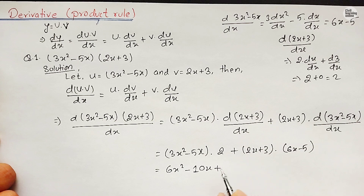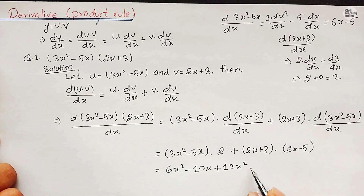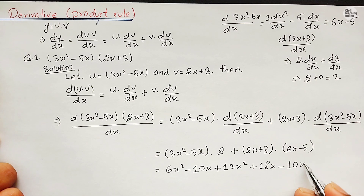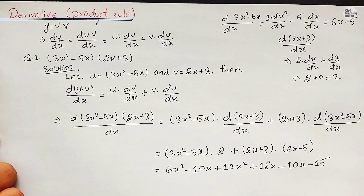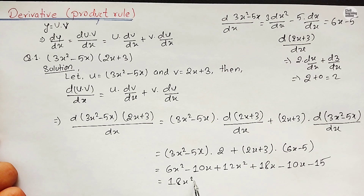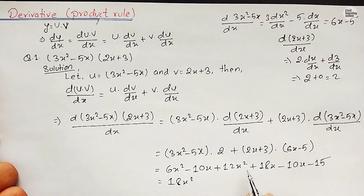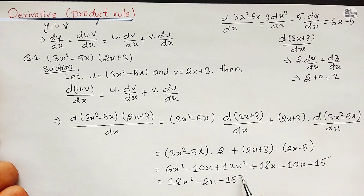Expanding and collecting: 6x² - 10x + 12x² + 18x - 10x - 15. Adding like terms: (6+12)x² = 18x², and -10 + 18 - 10 = -2x, giving the final answer: 18x² - 2x - 15.